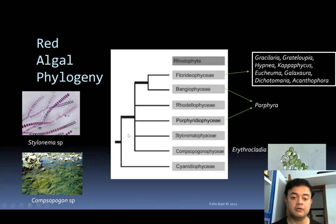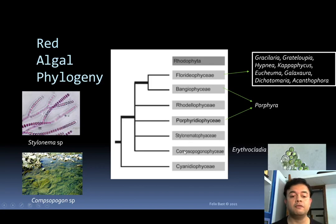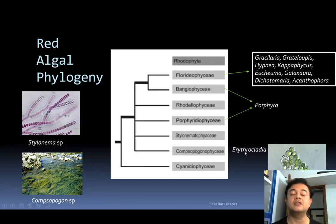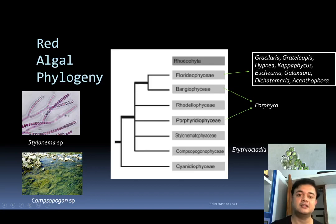Another group is not really a clade but a basal, paraphyletic assemblage that includes Rhodellophyceae, Porphyridiophyceae, Stylonematophyceae, and Compsopogonophyceae. Rhodella is a member of Rhodellophyceae, Stylonema is an example of Stylonematophyceae, and Compsopogon — a freshwater alga — is an example of Compsopogonophyceae, as is Erythrotrichia. Cyanidiophyceae is the extremophile group, and Cyanidium is an example.